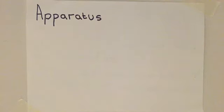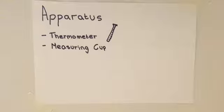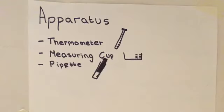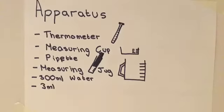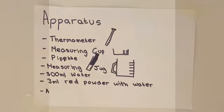The apparatus we used were a thermometer, a measuring cup, a pipette, a measuring jug, 300 ml of water, 3 ml of red powder mixed with water, and a glass.